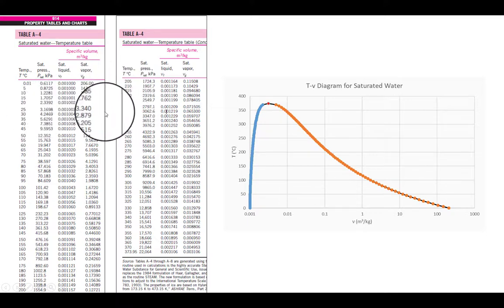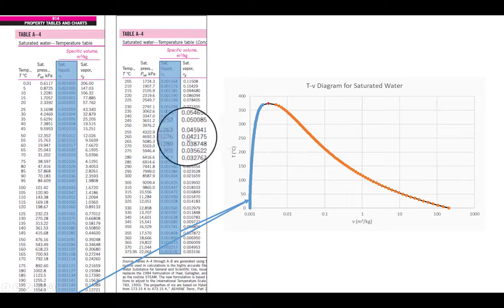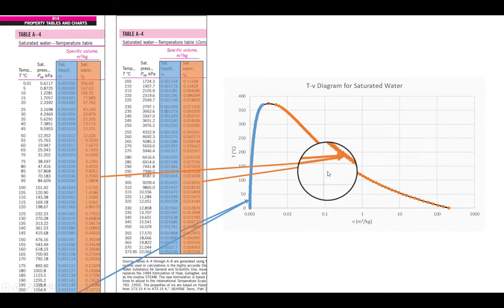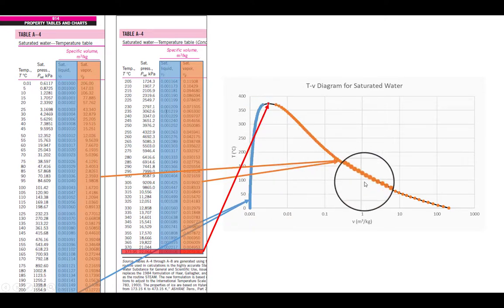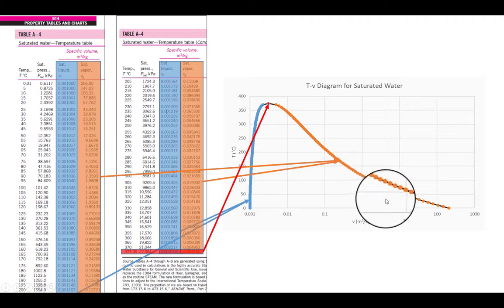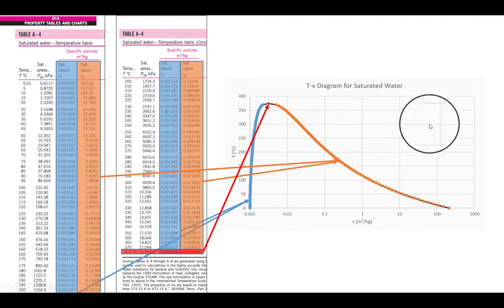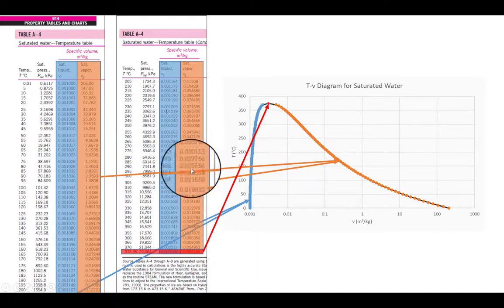Those are all six problems. We worked with one saturated water table split across two pages. The v_f values are on the left side of the T-v diagram, v_g values on the right, and the critical point is where v_f equals v_g. Everything under the dome is a mixture, everything to the upper right is superheated gas, and everything to the upper left is a sub-cooled liquid.